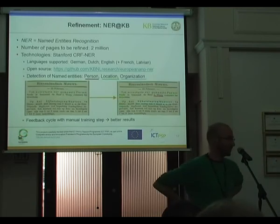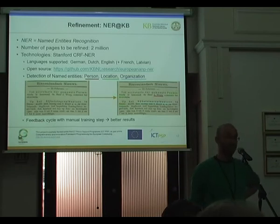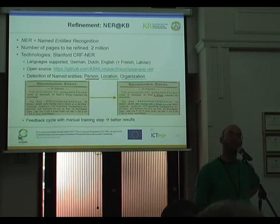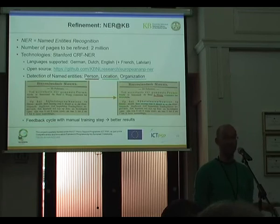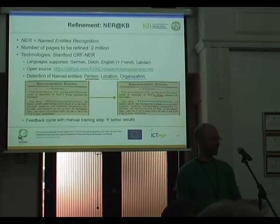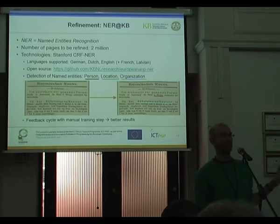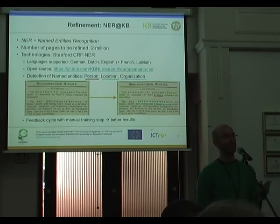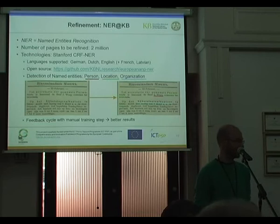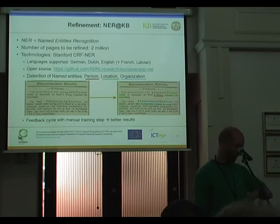I'm already over time, so finishing up quickly. For the last step we have named entity recognition — there's also a hands-on session tomorrow where you can see tools and do some testing. This is done in my library using technology developed at Stanford University. The tool is available online as open source on our GitHub. It allows us to detect normalized, standardized names of persons, places, and organizations in the text, enabling specific search scenarios.